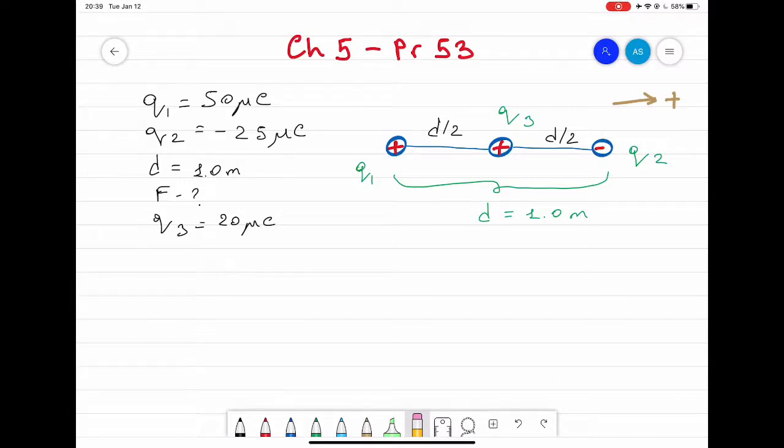is placed midway between q1 and q2. Now you have to find the net force on q3. First of all, find the force between q1 and q3. Since they are positive charges, that means they will repel each other.